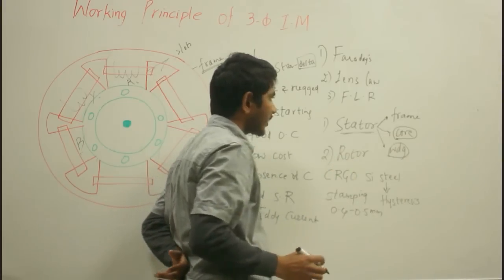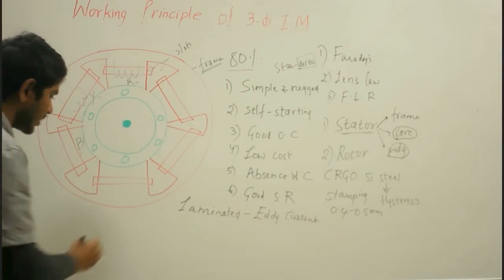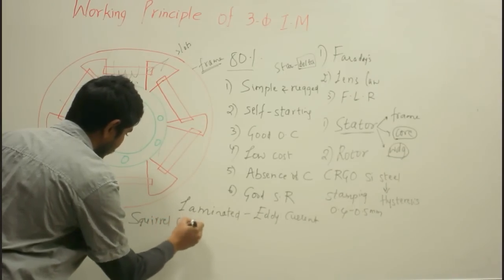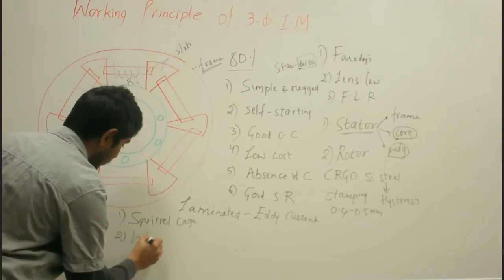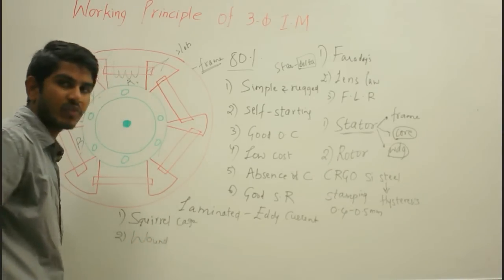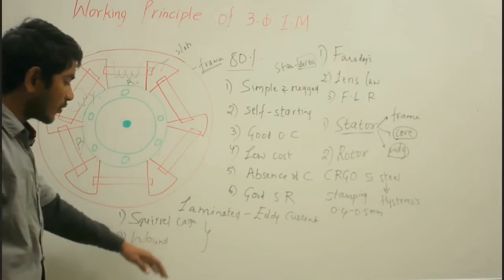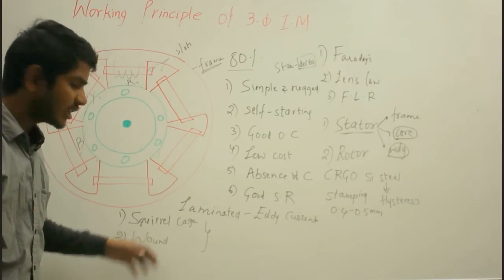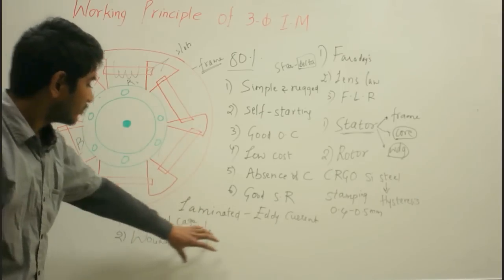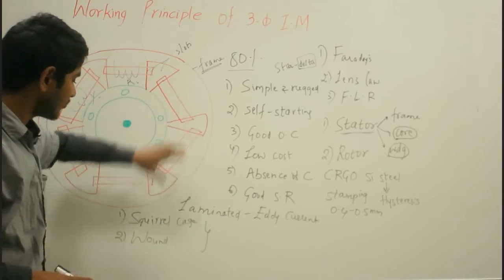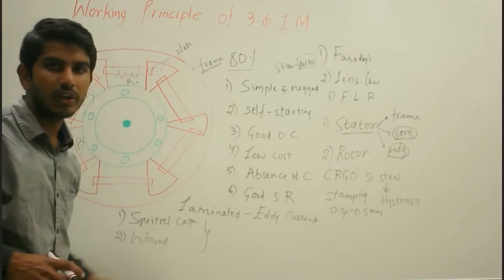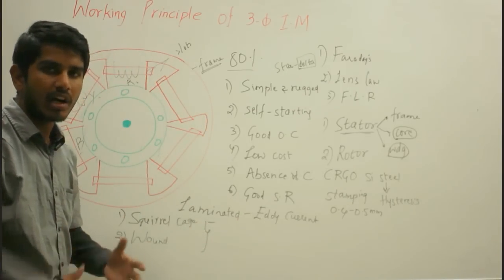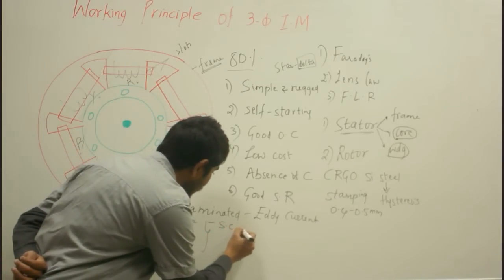Coming to the rotor, it can be classified into two types: the squirrel cage type rotor and the wound rotor or slip ring rotor. Based on the type of rotor, we have two types of induction motors: squirrel cage type and wound or slip ring type. The stator part is the same for both. In squirrel cage type, the rotor conductors can be aluminum, brass, or copper, and they are permanently short-circuited through end rings.